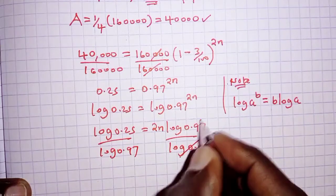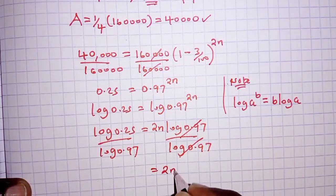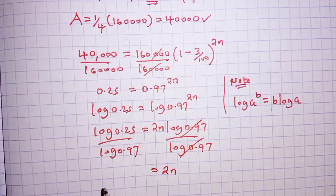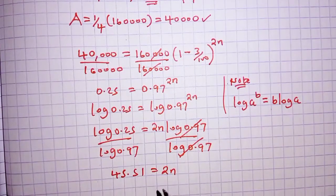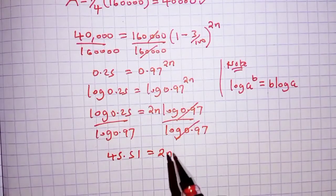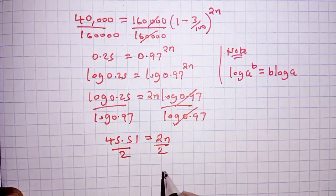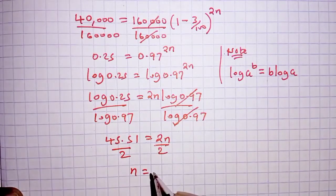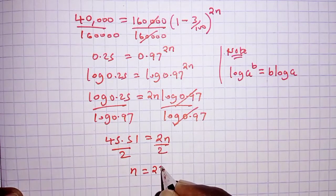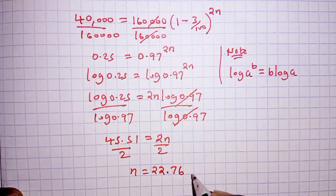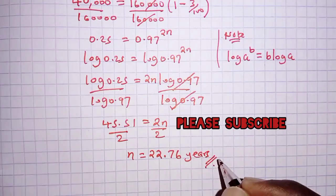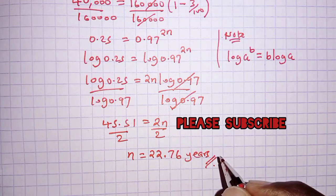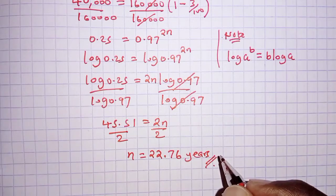On the right-hand side the log 0.97 terms cancel, leaving 2n. On the left-hand side, dividing gives 45.51. Since we need the value of n, we divide both sides by 2, giving n equals 22.76 years. That is how we solve this question. Thank you for watching and staying with me to the end — hope to see you in the next video, bye.